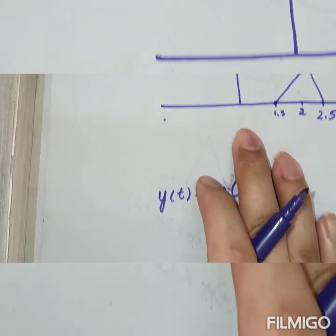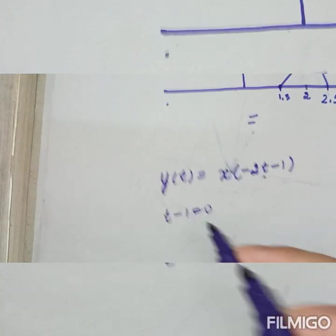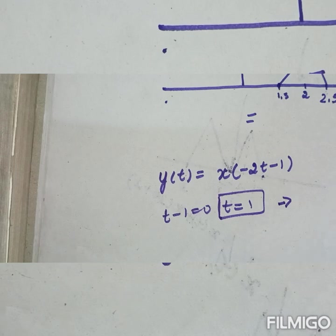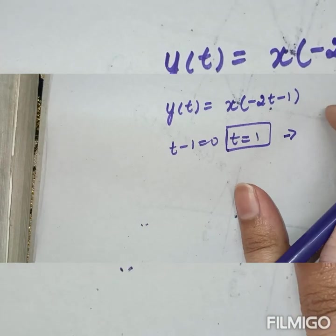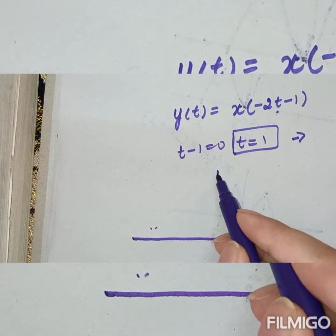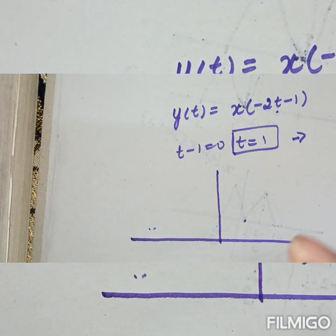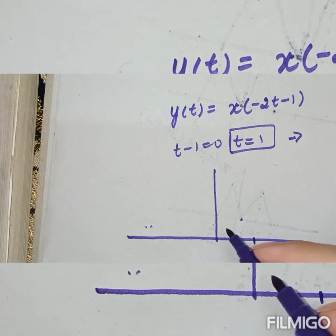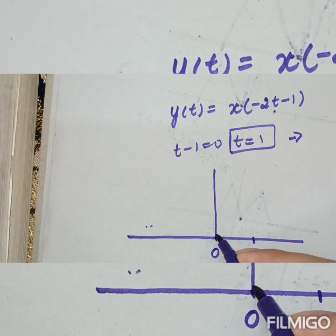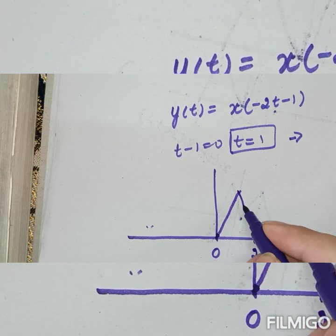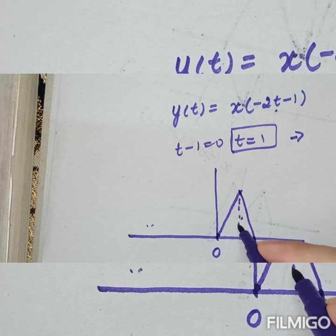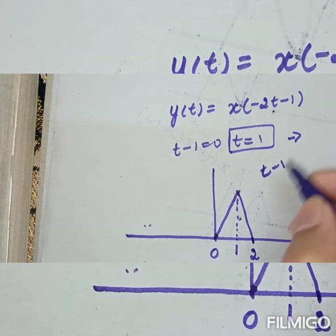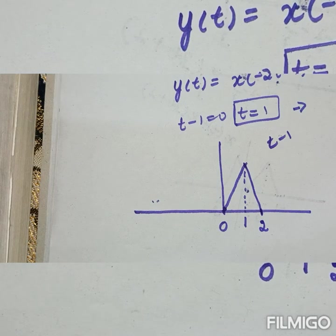First, the shifting process: t minus 1 equals 0, so t equals 1, which is a right shift by 1. The original signal ranged from minus 1 to 1. After a right shift by 1, it ranges from 0 to 2. This is the t minus 1 shifted signal.